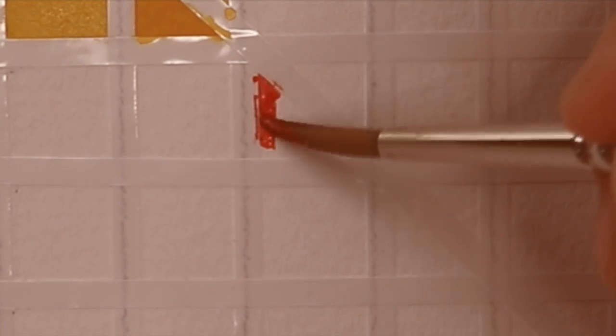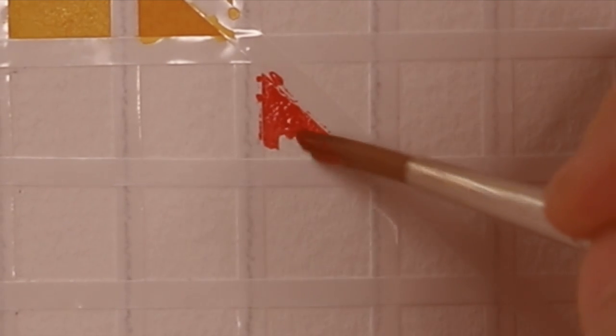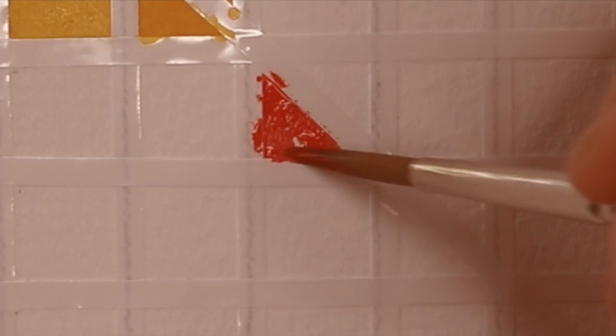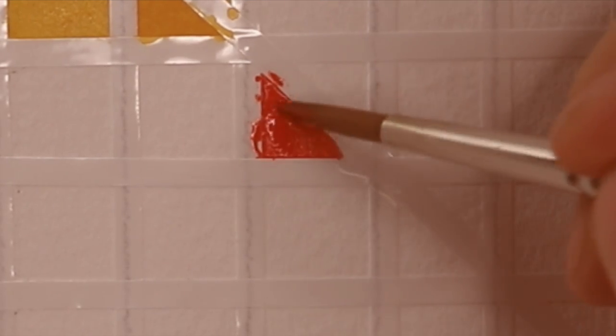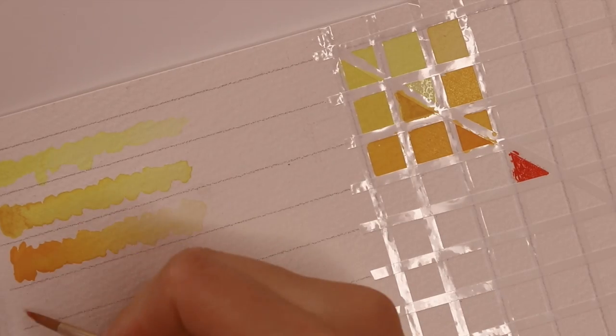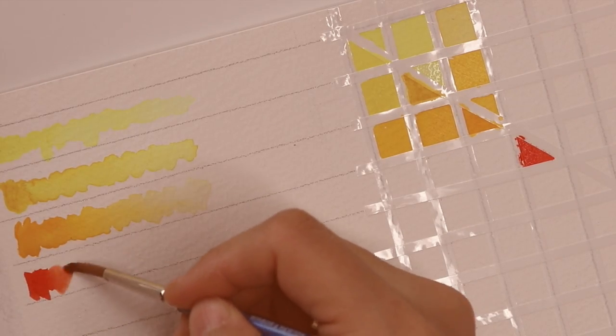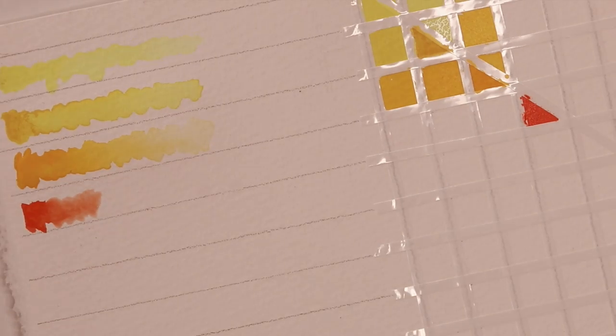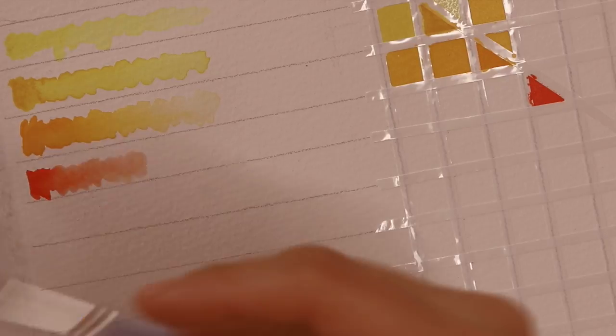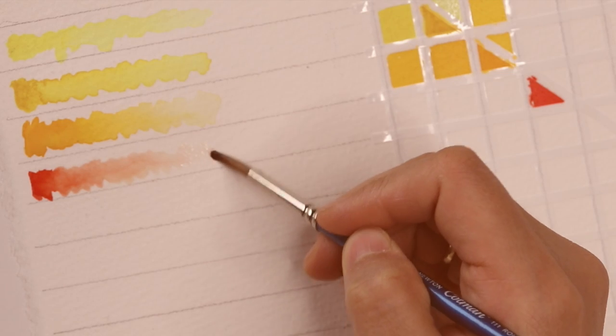For the swatches, the goal is to see a gradient of color intensity of the pigment on paper. You can achieve this by dipping the watercolor brush into water in between strokes without touching the pigment again. Gradually, the pigment on the watercolor brush will be diluted as the swatch goes to the right. And here I finished all the color swatches.